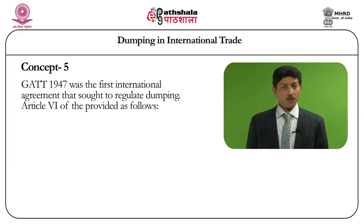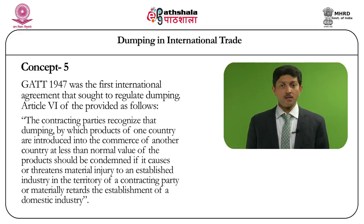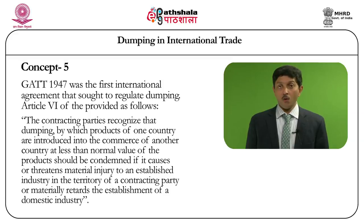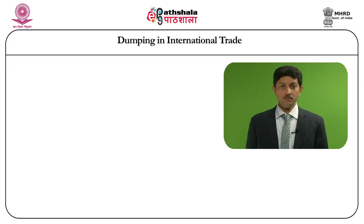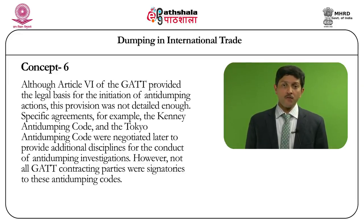Article 6 of the General Agreement or the GATT provided as follows: the contracting parties recognize that dumping, by which products of one country are introduced into the commerce of another country at less than normal value of the products, should be condemned if it causes or threatens material injury to an established industry in the territory of a contracting party or materially retards the establishment of the domestic industry. Although Article 6 of the GATT provided the legal basis for the initiation of anti-dumping actions, this provision was not detailed enough.